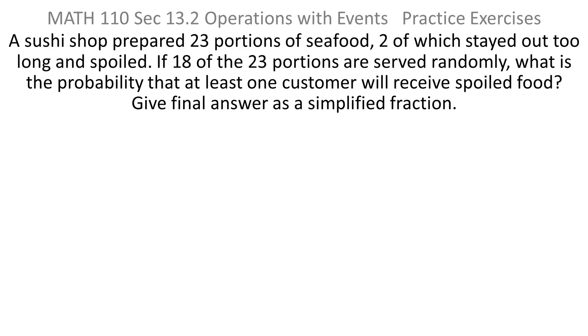A sushi shop prepared 23 portions of seafood, two of which stayed out too long and spoiled. If 18 of the 23 portions are served randomly, what is the probability that at least one customer will receive spoiled food? And give the answer as a simplified fraction.